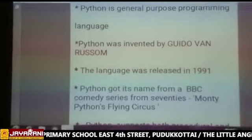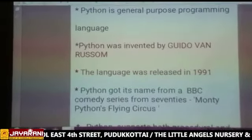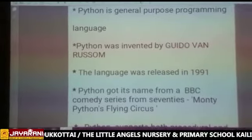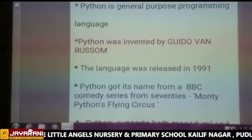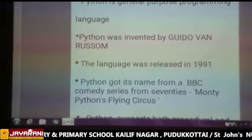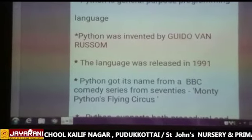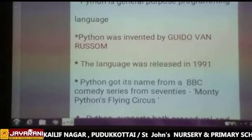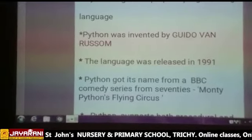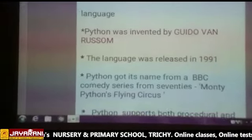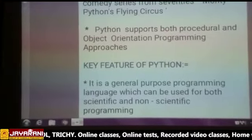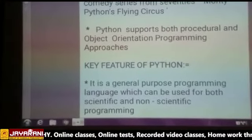The main important points of Python: it is a general purpose programming language, invented by Guido Van Rossum, and this language was released in 1991. How did we get the name Python? From the BBC comedy series from the 70s — the name was Monty Python's Flying Circus — and from that we get the name Python. Python supports both procedural and object-oriented programming approaches.